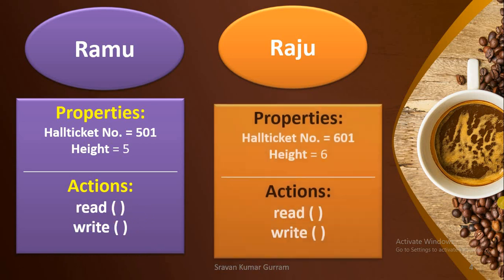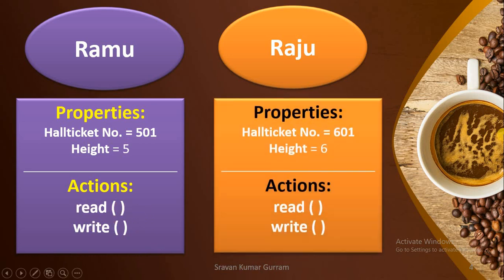In the same way, student Raju also has some properties and can do some actions. The hall ticket number of Raju is 601 and his height is 6 feet. As Raju is also a student, he can read and write.